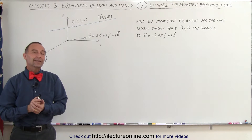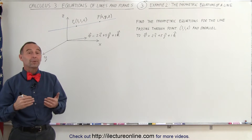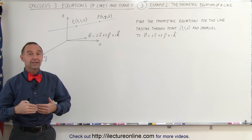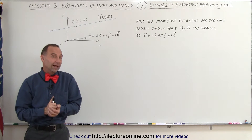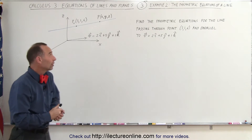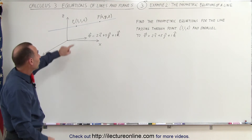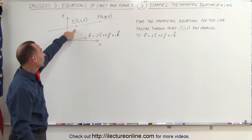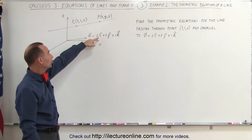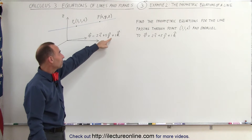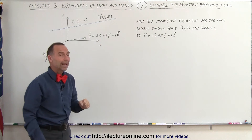Welcome to our lecture online. Here's an example of how to find the actual parametric equations of a line in space. The line goes through the point (3, 1, 6) and is parallel to the vector 2i plus 5j plus 1k.